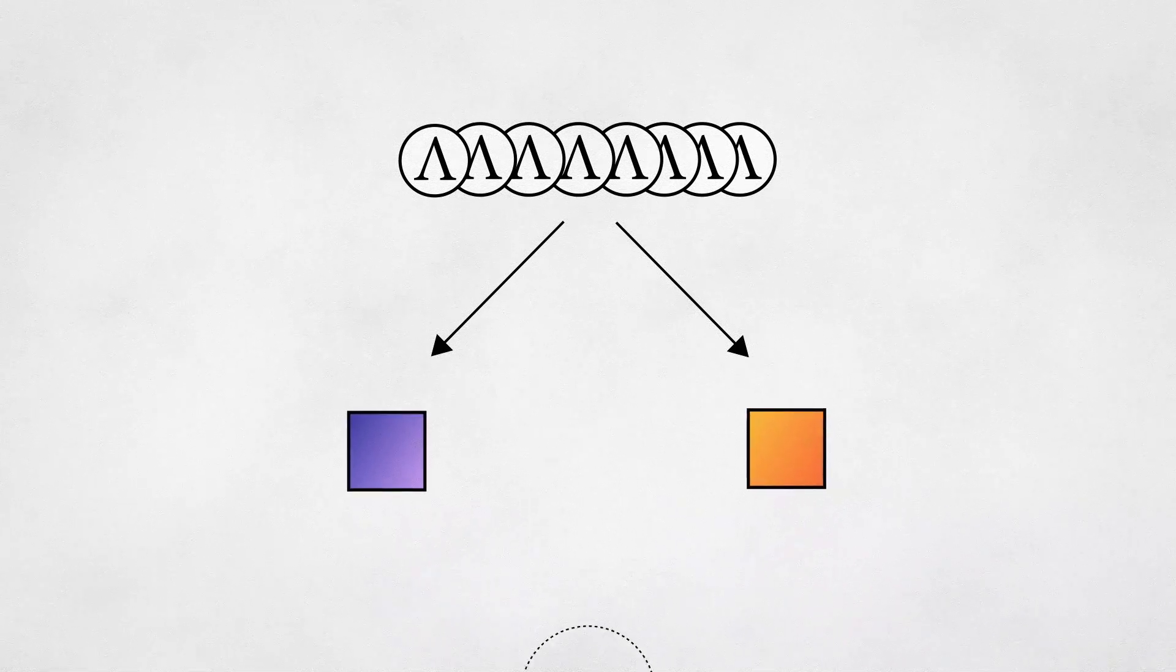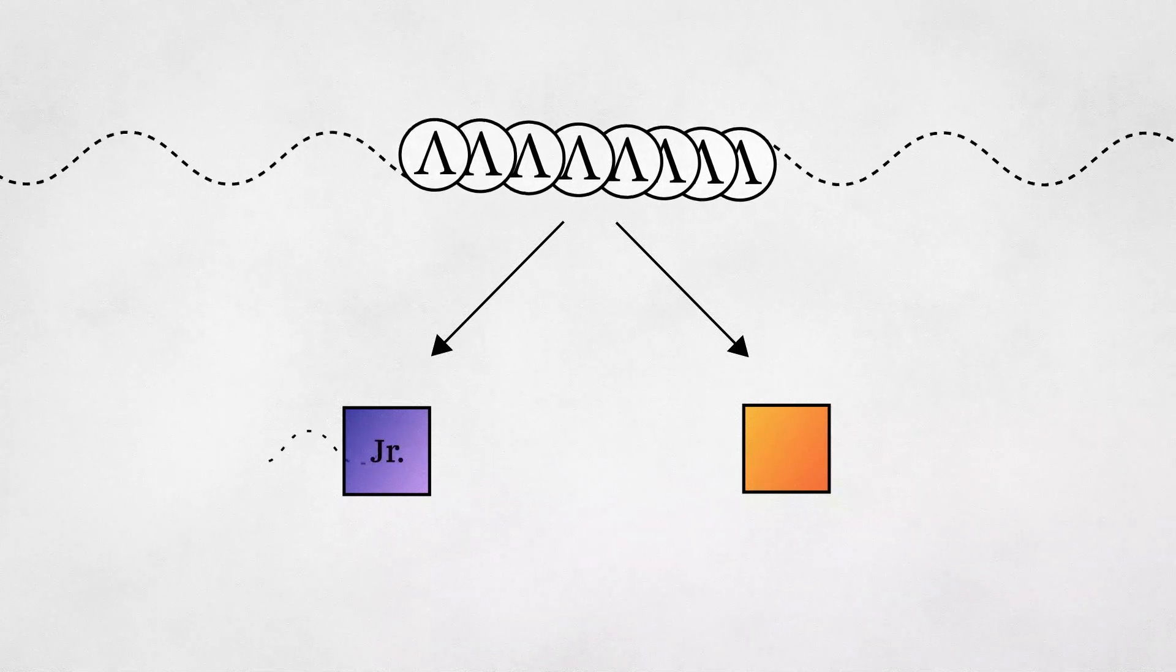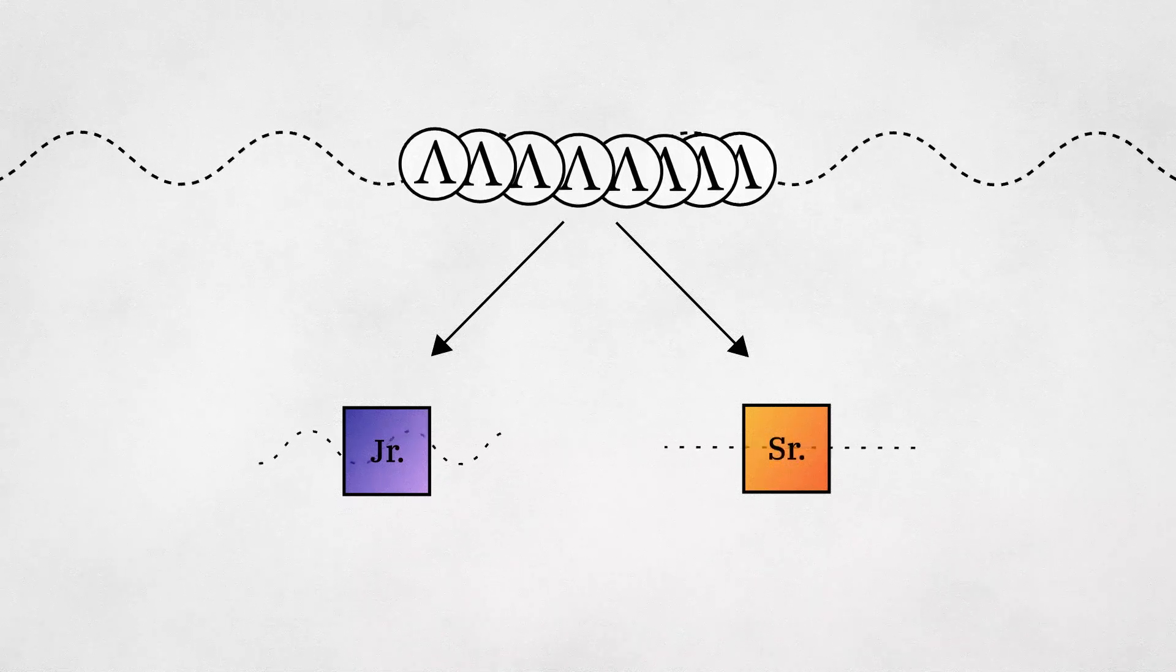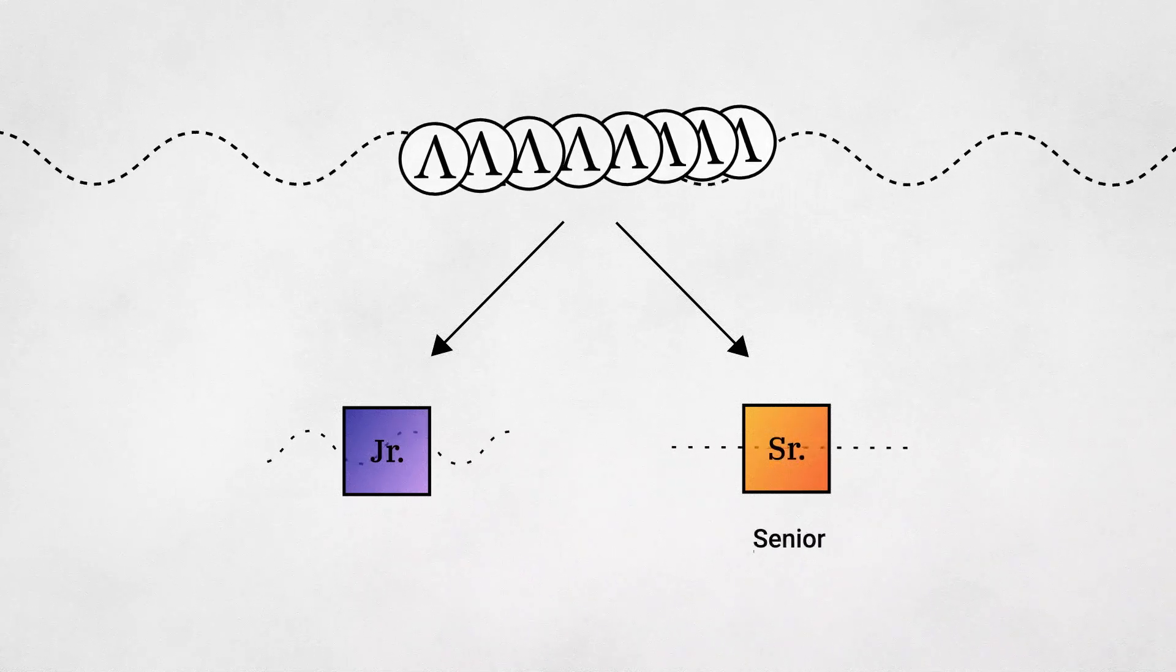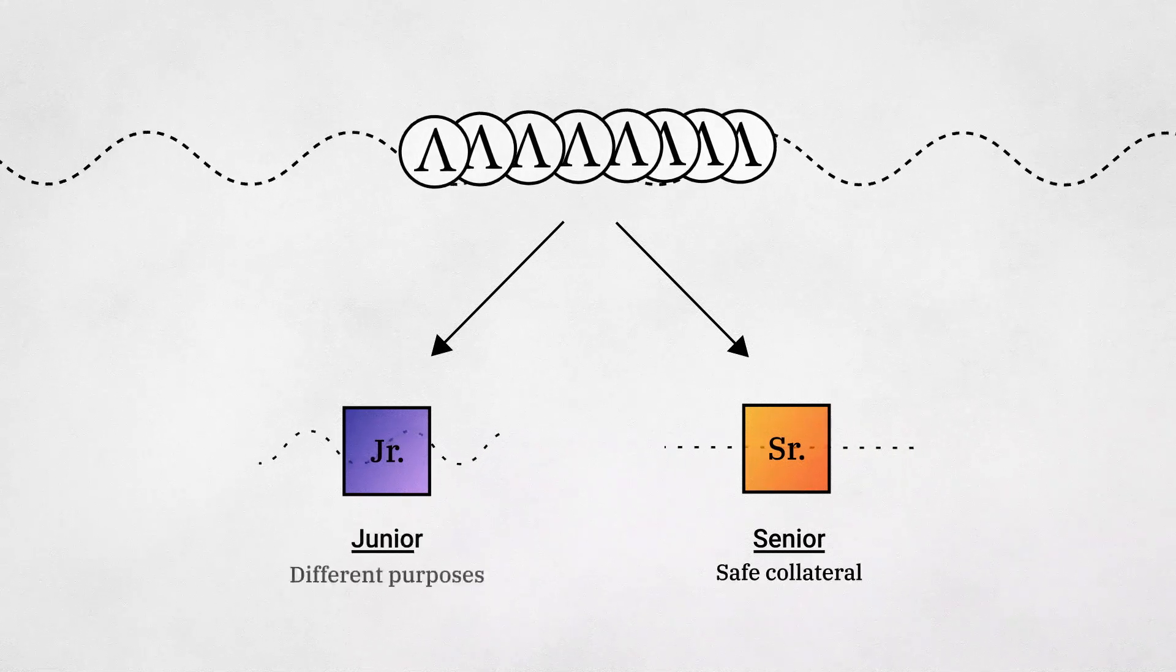For example, you can take the volatility of Ample and split it into a junior asset that's more exposed to Ample's underlying volatility and a senior asset that is less exposed to Ample's underlying volatility. Then, you can use the senior asset as safe collateral and the junior asset for a different purpose.